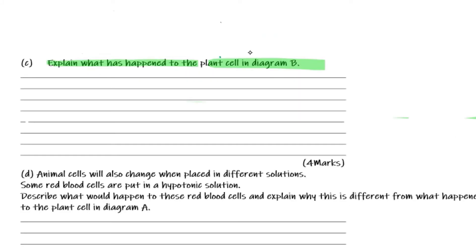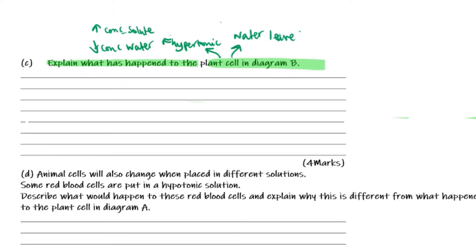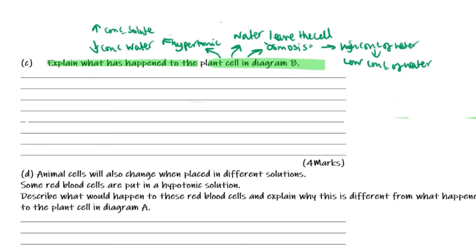For the question: explain what happened to the plant cell in Diagram B. Diagram B of the plant cell showed a hypertonic solution. In a hypertonic concentration, we have an increased concentration of solute and a decreased concentration of water. That means water will leave the cell by the process of osmosis, going from a high concentration of water to an area of low concentration of water.